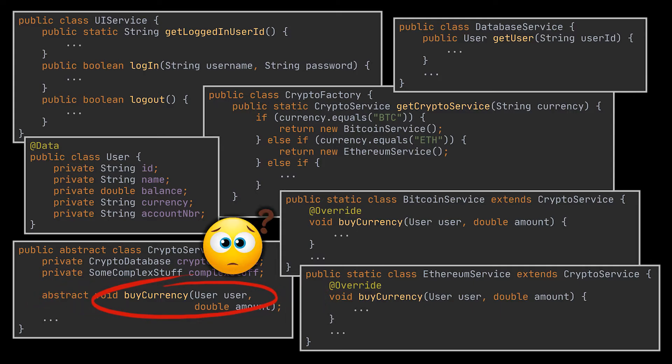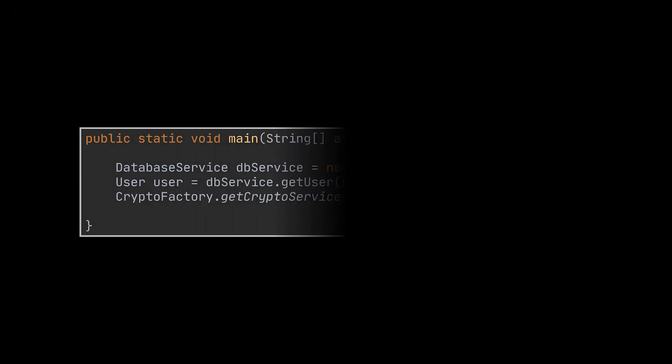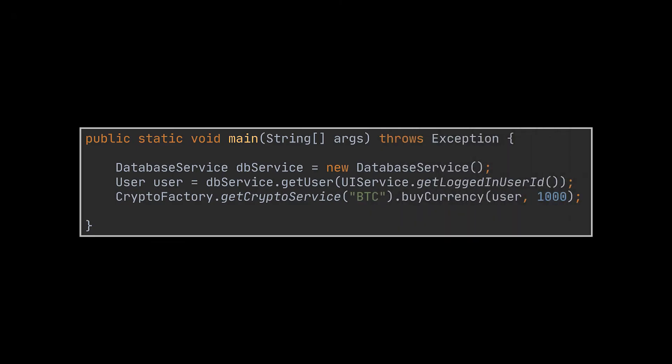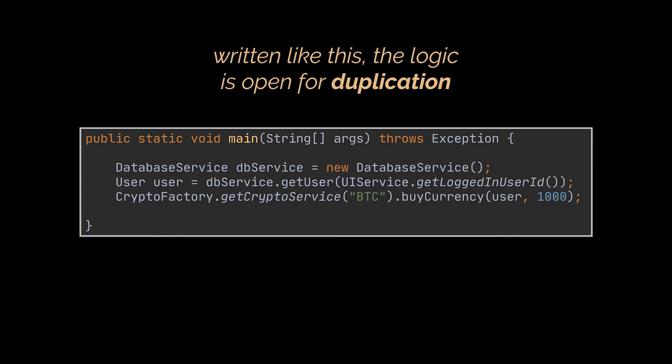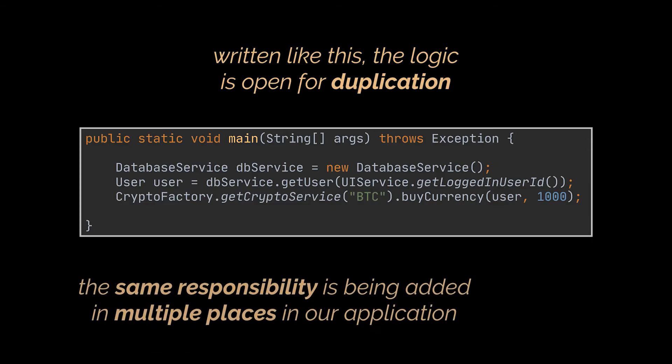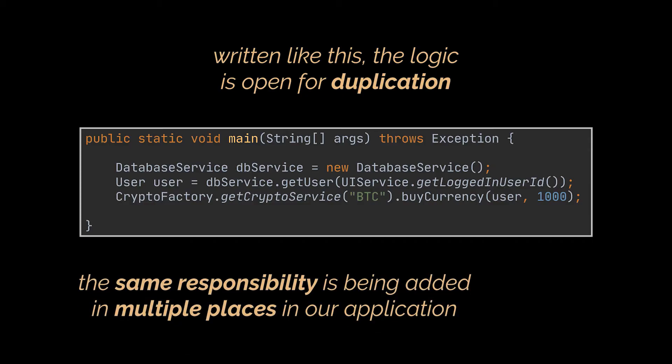What you want is to reuse the buy currency method offered by this library — how hard can that be, right? Well, you can go ahead and directly call the method provided by this library after fetching the required parameters of the service's method, and be done with it. However, there is a catch: what if this code was needed by other parts of our application? We can't let these parts depend on the code we just wrote — we will have to duplicate this code here and there.